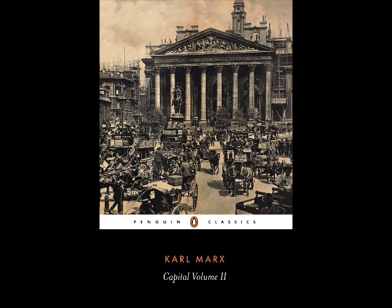What is important here is that if M to L appears as a function of money capital, or money appears here as a form of existence of capital, then this is in no way simply because money is involved here as the means of payment for a human activity with a useful effect, for a service. Money can be spent in this form only because labor power is found in a state of separation from its means of production, including the means of subsistence as means of production of labor power itself. And because this separation is abolished only through the sale of labor power to the owner of the means of production, a sale which signifies that the buyer is now in control of the continuous flow of labor power. The capital relation arises only in the production process because it exists implicitly in the act of circulation, in the basically different economic conditions in which buyer and seller confront one another, in their class relation. It is not the nature of money that gives rise to this relation; it is rather the existence of the relation that can transform a mere function of money into a function of capital.